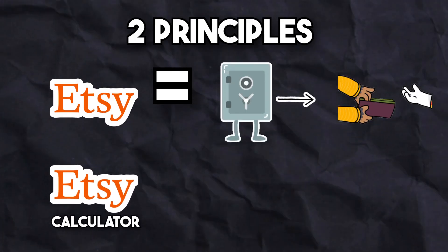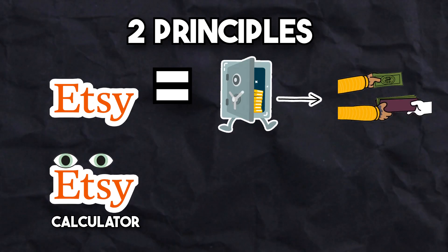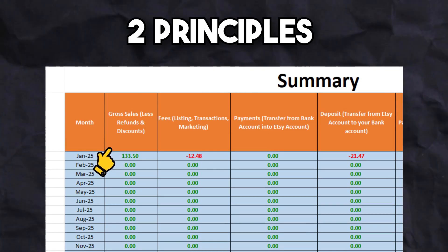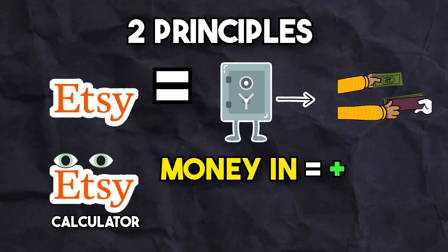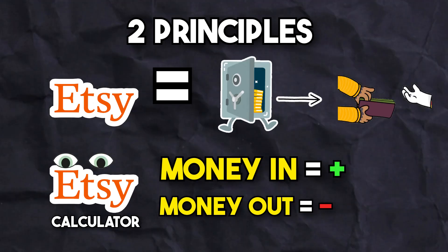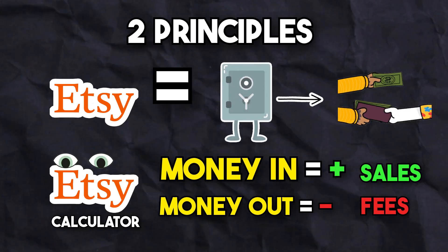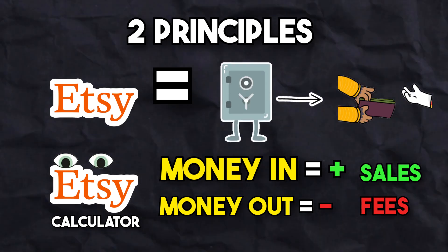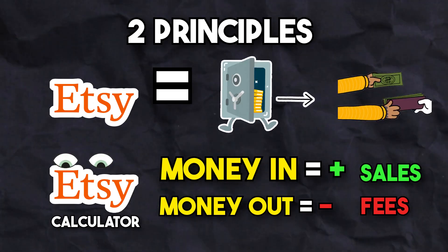The second principle is that you need to look at the Etsy calculator from the perspective of your Etsy account. In the summary section of the calculator, you will notice positive and negative numbers. Money received into Etsy will be a positive number and money leaving your Etsy account will be a negative number. So things like sales from Etsy — money coming into your Etsy account — will be positive, and Etsy fees — money leaving your Etsy account to pay Etsy — will be negative. Understanding this will help you understand how your Etsy account operates and how the calculator works.